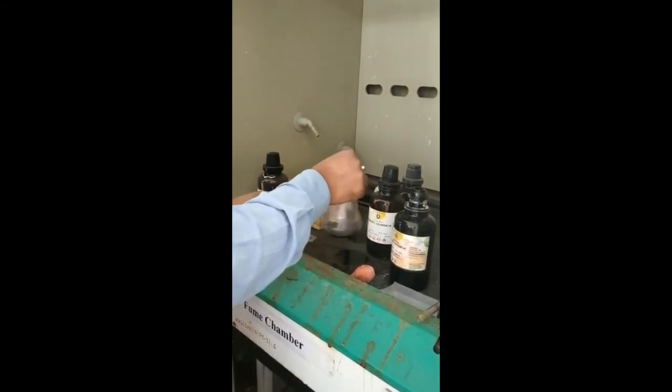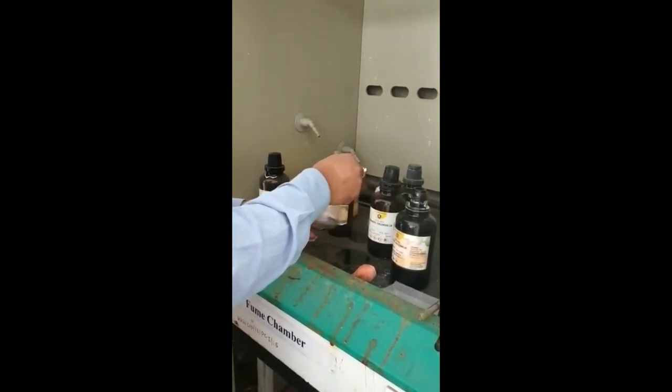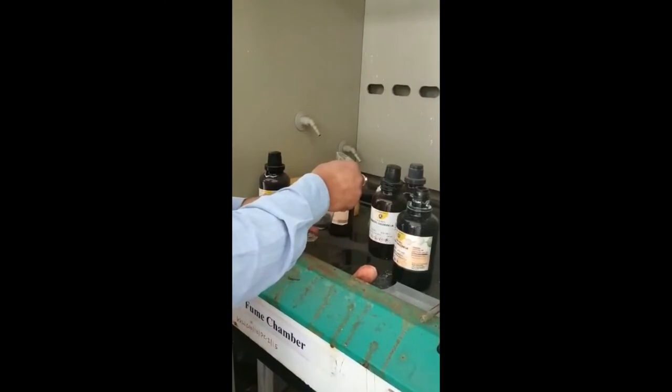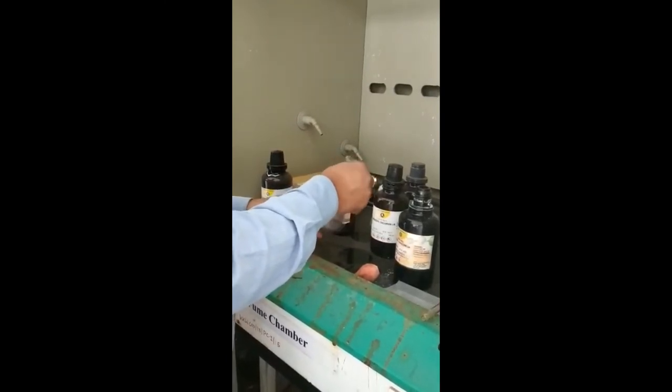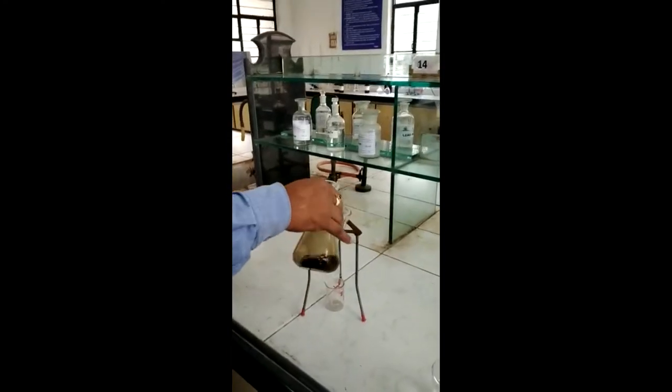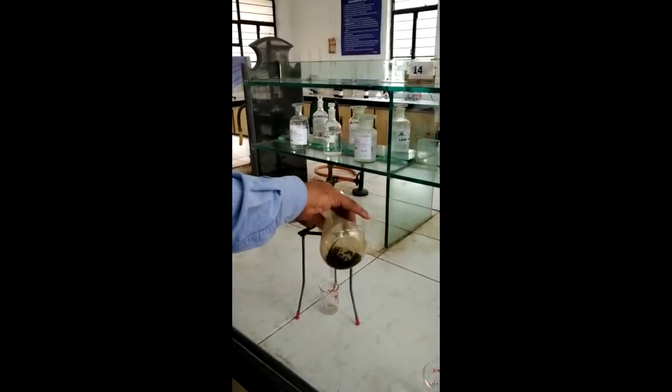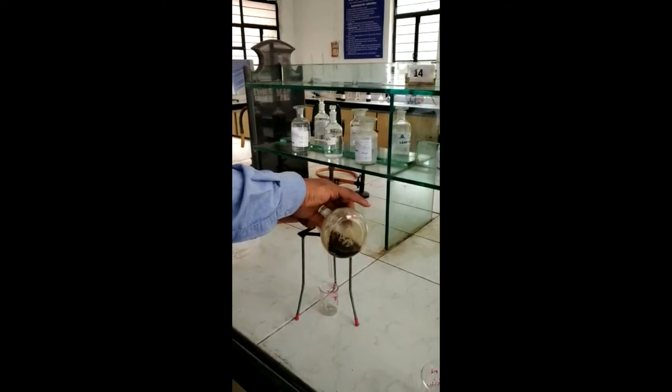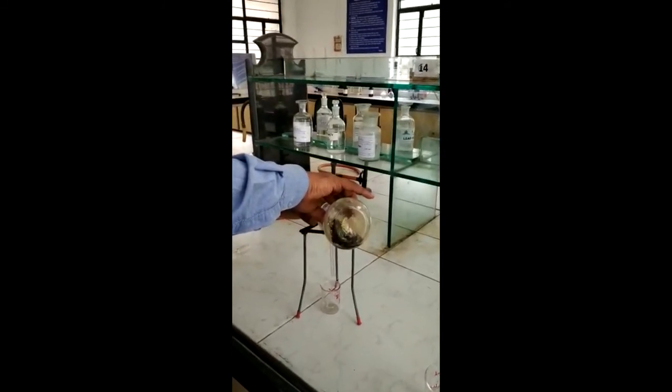For 10-15 minutes you get the precipitate of derivative of phenol, that is phenyl benzoate. After shaking you get the precipitate of derivative of phenol. Filter it off.